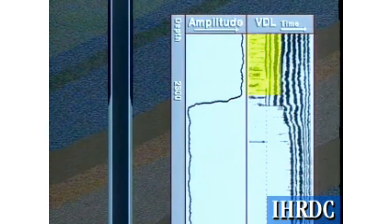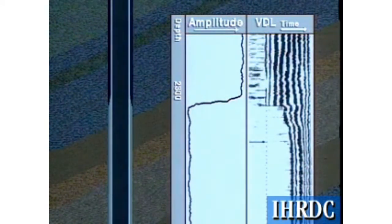Notice that the pipe portion of the received acoustic signal appears as strong, straight lines. The formation signal, on the other hand, appears at different times, since the cement thickness and formation acoustic properties change from one point to the next.